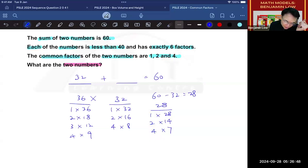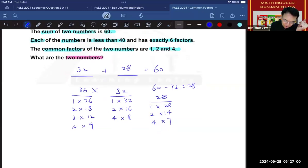So we can put it, and since 32 plus 28 is 60, we now know that the two numbers must be 32 and 28. So we say the two numbers are 28 and 32.